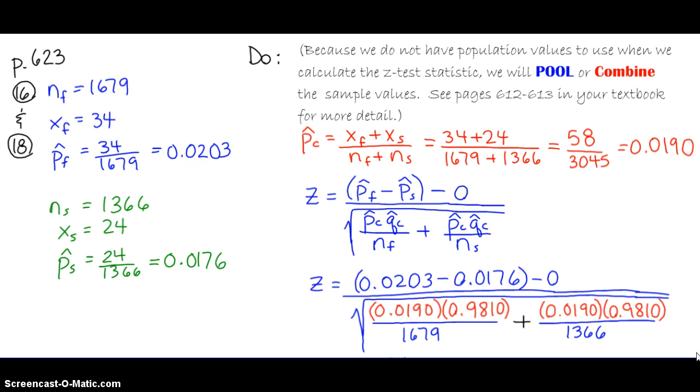But basically here in red, you see the sample P hat sub C, and the C is for combined. So what we've done is we've combined, in the numerator, the count of freshmen and the count of seniors, and that's the 34 and the 24. And in the denominator, we've combined the sample sizes. This gives us a pooled sample statistic, sample proportion of 0.0190.